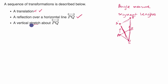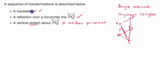So a vertical stretch — if we're talking about a stretch in general — is going to preserve neither angle measures nor segment lengths. In general, if you're doing rigid transformation after rigid transformation, you're going to preserve both angles and segment lengths. But if you throw a stretch in there, then all bets are off — you're not going to preserve either of them.